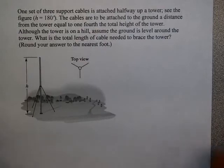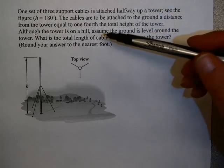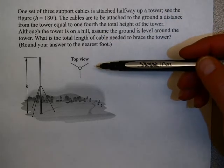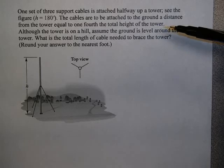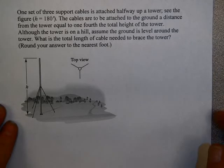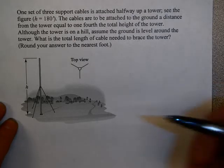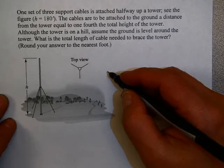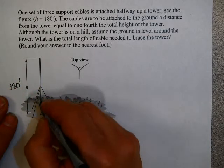Here's a problem, just slightly different, that I'd like you to try, and then we'll do together. One set of three support cables attached halfway up a tower. See the figure. Height equals 180 feet. The cables are to be attached to the ground at a distance from the tower equal to one-fourth of the total height of the tower. Although the tower is on a hill, assume the ground is level around the tower. What is the total length of cable needed to brace the tower? Round your answer to the nearest foot. So you might want to pause the video and try this on your own.